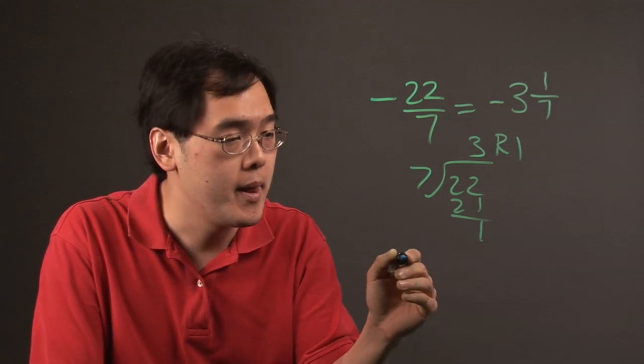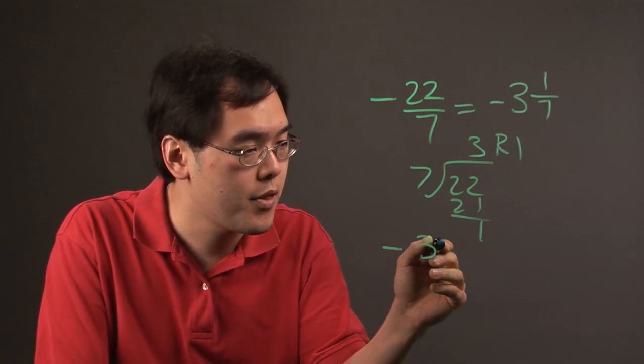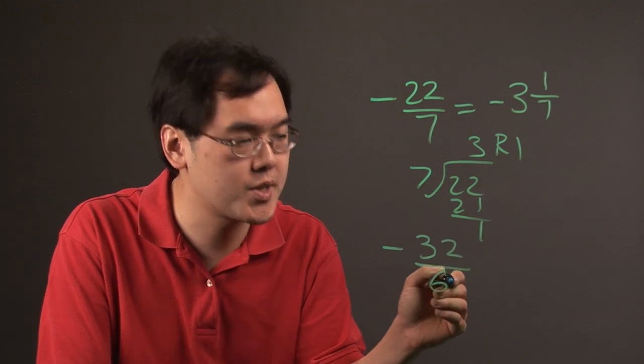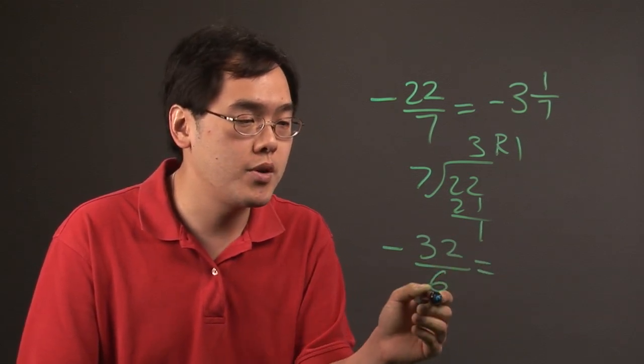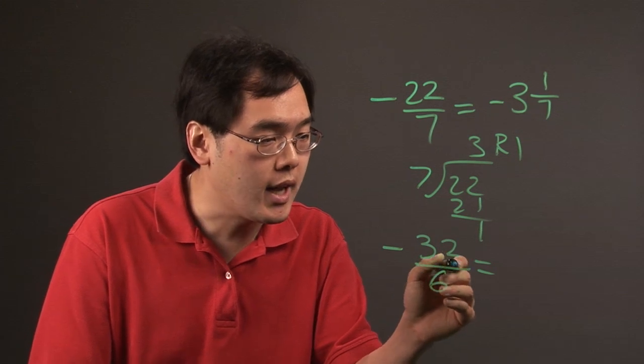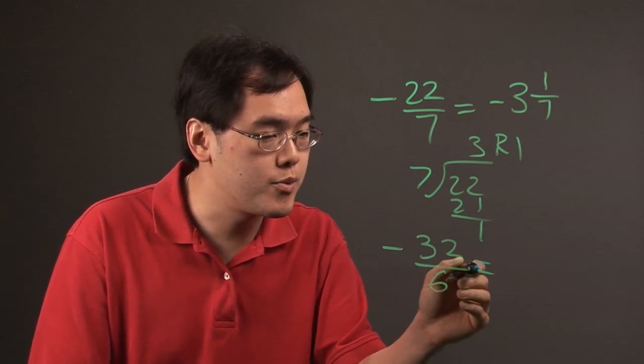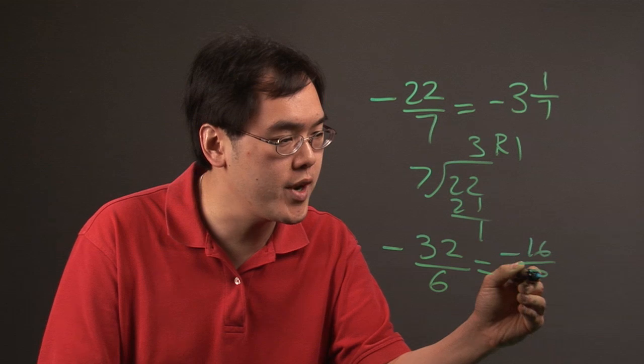Now another way, if you have negative 32 over 6, same kind of idea. What you can do is reduce both numbers at the same time. And it looks like they can both be reduced by 2, so this will be negative 16 over 3.